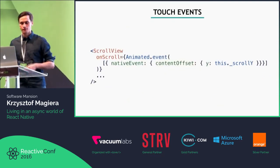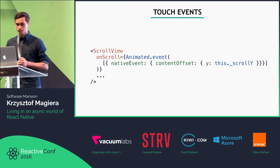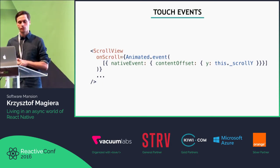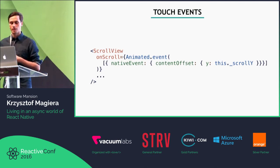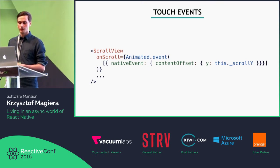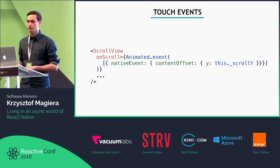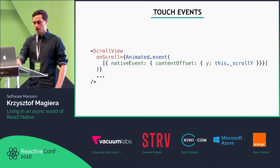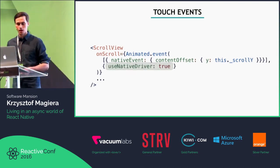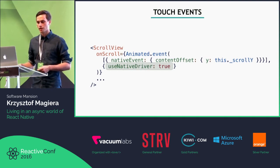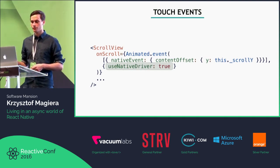One way of dealing with this is by using Animated again. We can implement this using AnimatedEvent as a scroll handler. AnimatedEvent allows us to map anything delivered as a payload of an event to an AnimatedValue. Here we map whatever is in the event under nativeEvent.contentOffset.y to an AnimatedValue called scrollY. Thanks to recent updates in React Native, we can also use the native driver with this, allowing the whole interaction between the scroll and the navigation bar position to run in the UI thread.